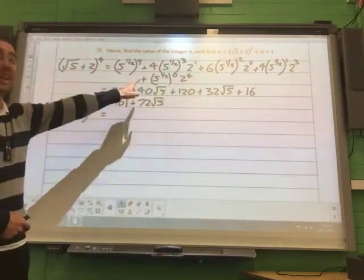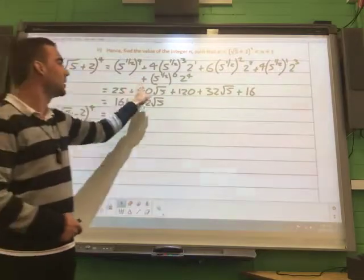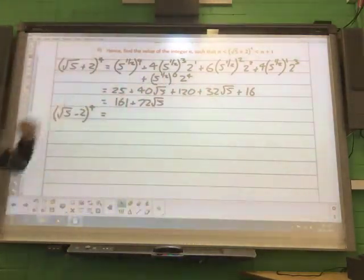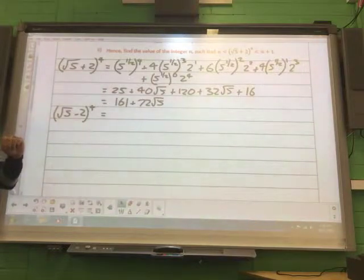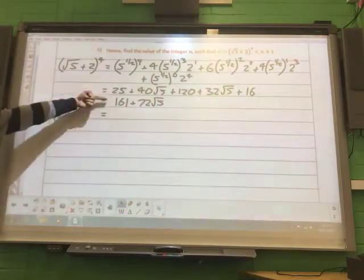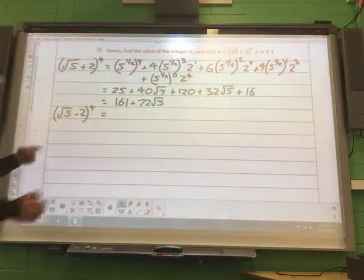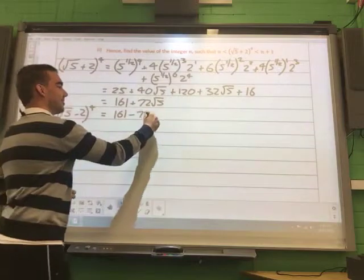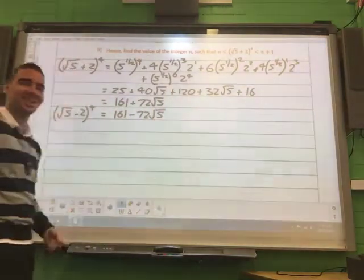So that means each second term, and nicely worked out for us, the second terms are the surds. And the other terms are whole numbers which are positive. So what is my answer going to be in relation to this line here?